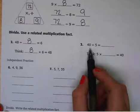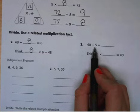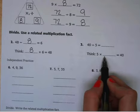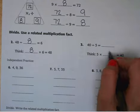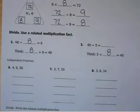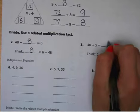On number 3, we have 40 divided by 5 equals blank. Well, if we think 5 times what equals 40, we know that 5 times 8 equals 40. So 40 divided by 5 must equal 8.